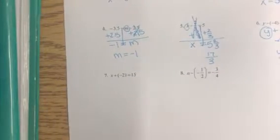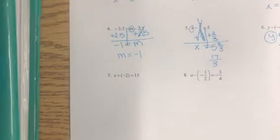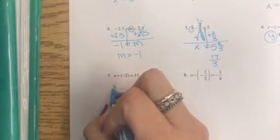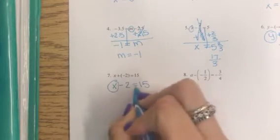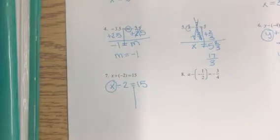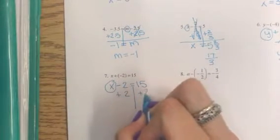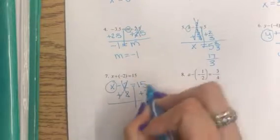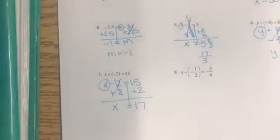Number seven, we also have two signs, a positive and a negative. We said that if there are opposite signs that would just be a subtraction. So we will undo subtracting 2 by adding 2. 15 plus 2 will give us x equals 17.